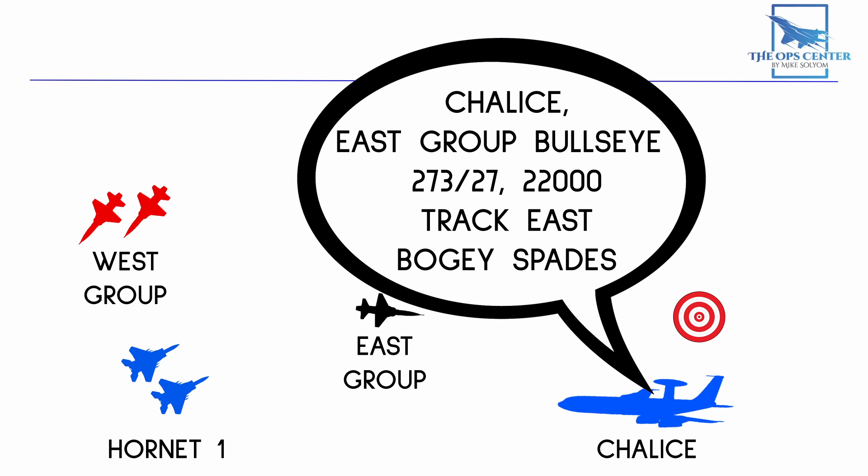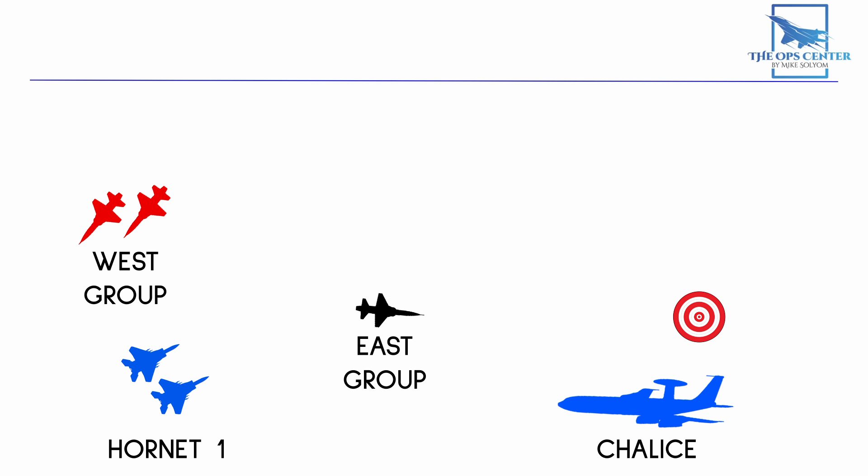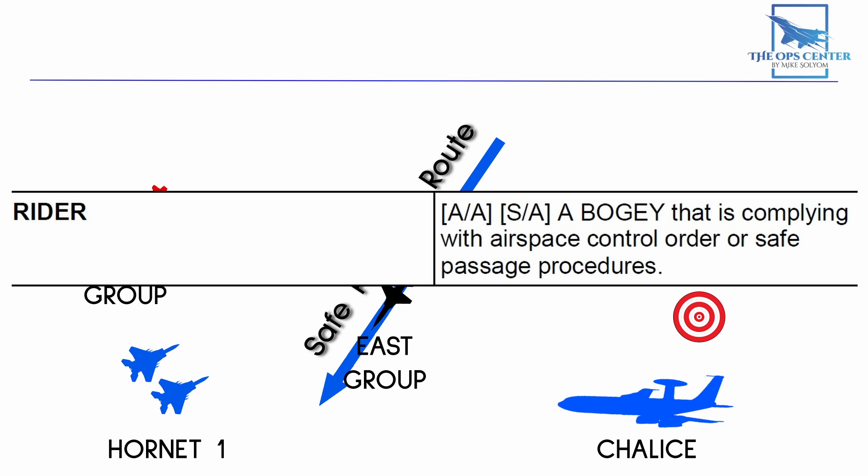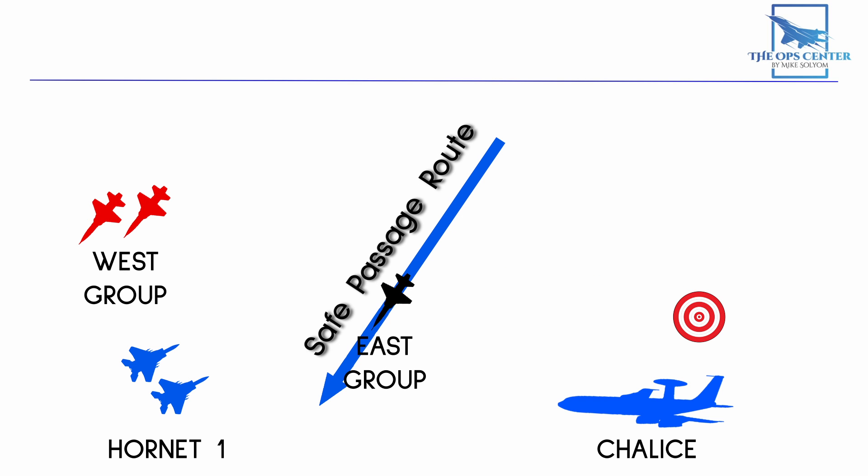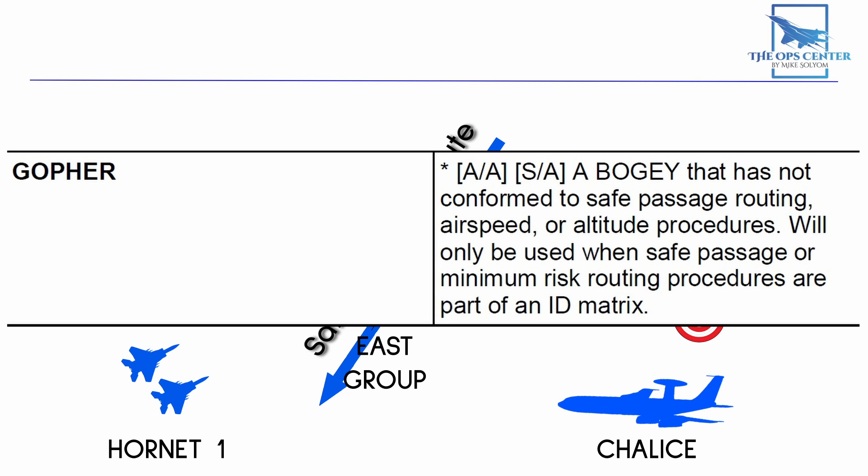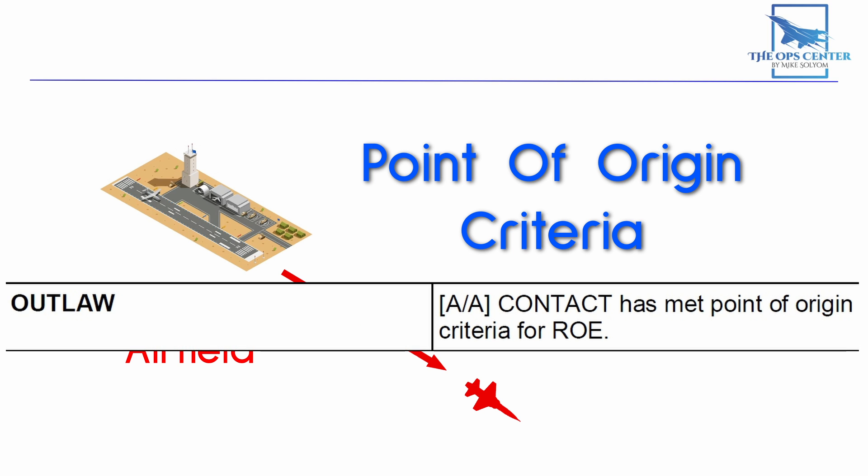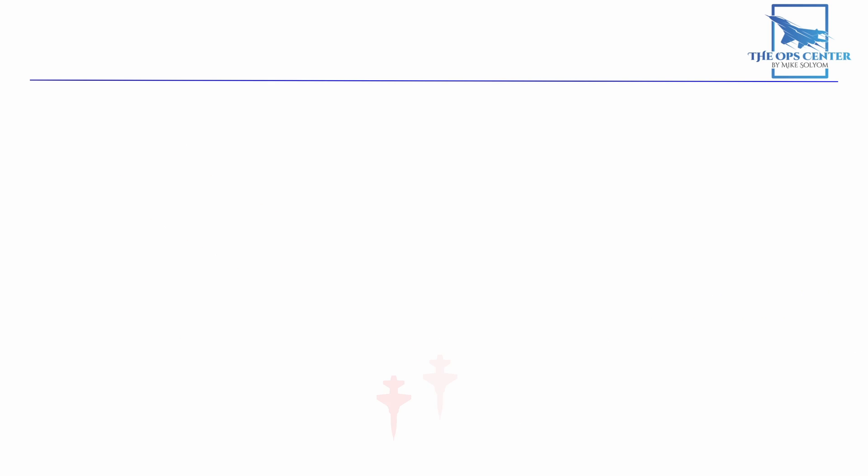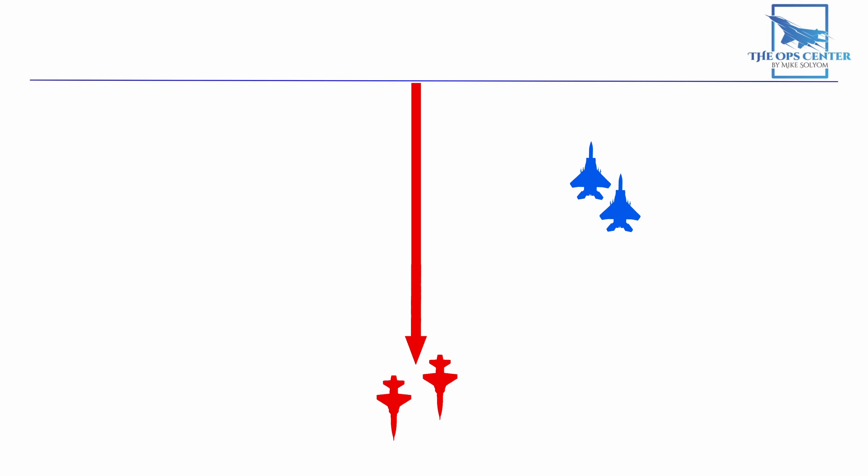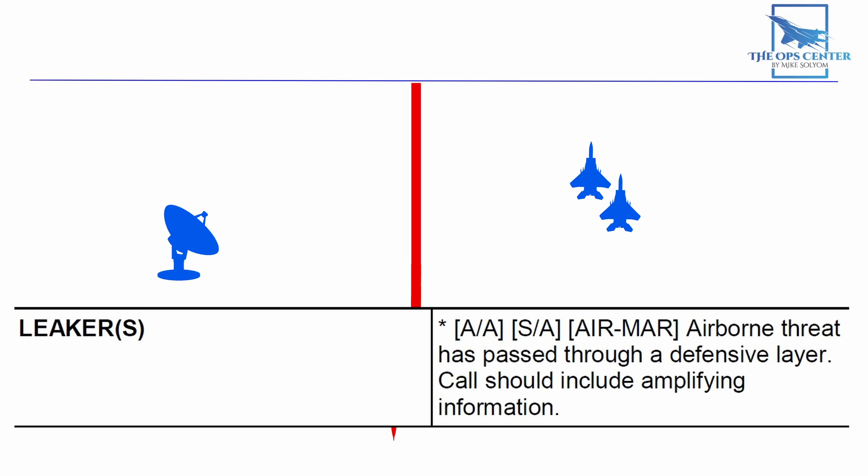If they continue to watch this bogey, they might see some procedural indicators. The bogey might fly a course that complies with the safe passage procedures outlined in the airspace control order. In this case, it gets the label of rider. There's also a brevity code for a bogey that is not conforming to safe passage procedures. That term is gopher. But what if there are procedural indicators for an enemy? There are some brevity codes for those too. If the contact meets point-of-origin criteria, in other words, it has been tracked taking off from a known enemy airfield, then it would be labeled as an outlaw. And if it's passed through a defensive layer, like let's say another DCA flight's lane or a zone covered by a friendly air defense system, then it would be called a leaker.